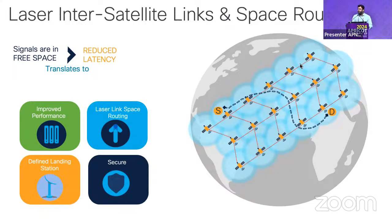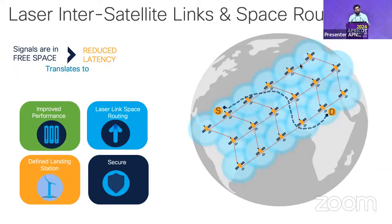When inter-satellite links (ISLs) are not used, the signal simply lands at the nearest gateway. With ISLs, we get reduced latency because the speed of light in space is faster — on fiber we get about two-thirds of light speed, but on laser ISLs we get near line-rate speed. ISLs also allow ground stations to be located closer to the intended destination.